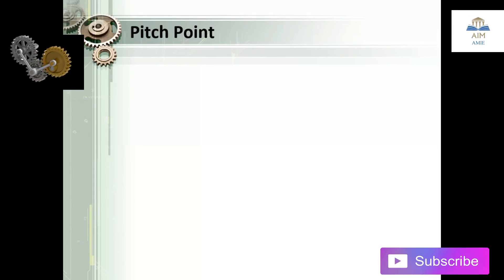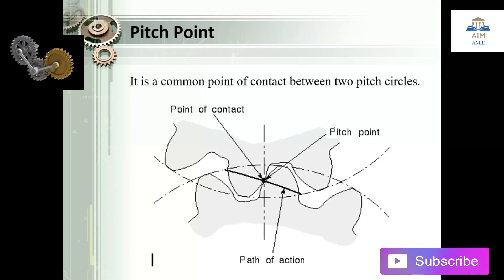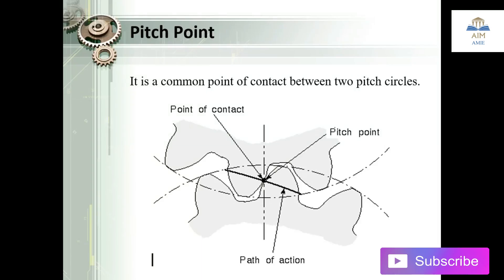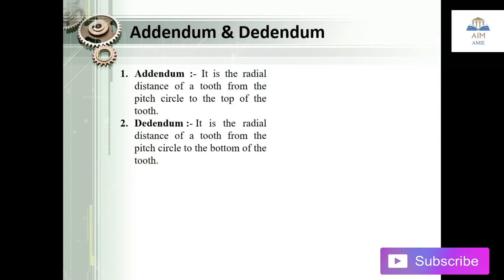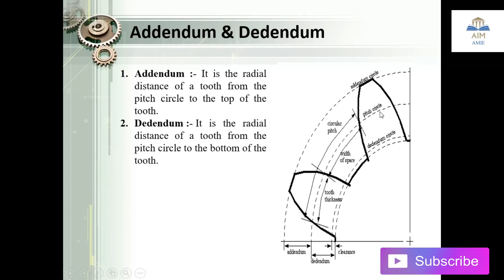The next one is the pitch point. The pitch point is the common point of intersection between two pitch circles. Next are the addendum and dedendum. Addendum is the radial distance of the tooth from the pitch circle to the top of the tooth, and dedendum is from the pitch circle to the bottom of the tooth. In this image, this portion above the pitch circle is the addendum, and the bottom portion is the dedendum.